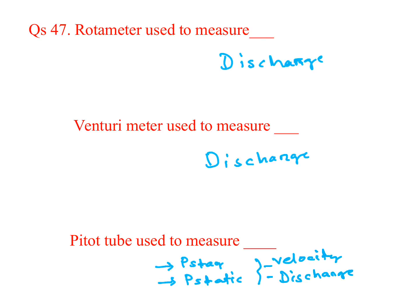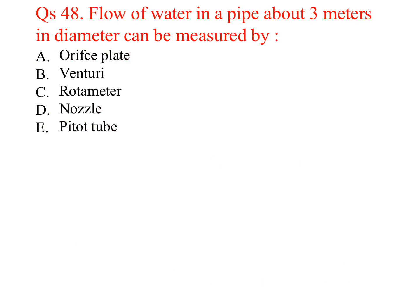If all options are given, the pitot tube's first priority is stagnation pressure. For flow of water in a pipe of about 3 meters diameter, the measurement options are: orifice plate — no; venturimeter — no; rotameter — no; nozzle — no. The pitot tube (option E) is the answer.